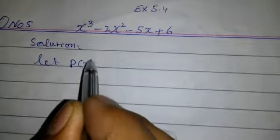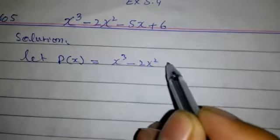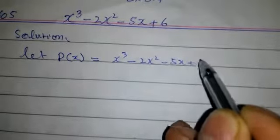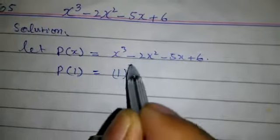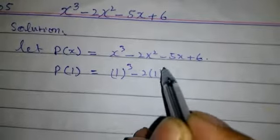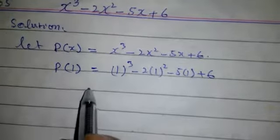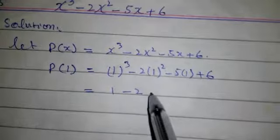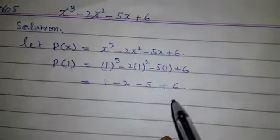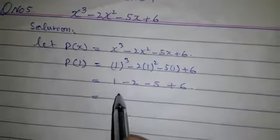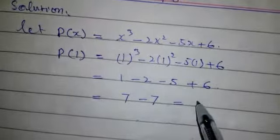Let p(x) = x³ - 2x² - 5x + 6. Now p(1) = (1)³ - 2(1)² - 5(1) + 6 = 1 - 2 - 5 + 6 = 7 - 7 = 0.